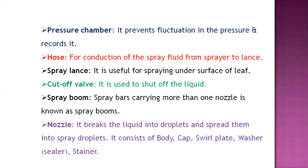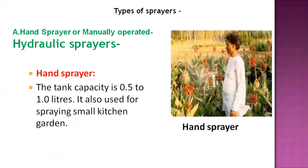Just like dusters, there are different types of sprayers available. The first type is the hand sprayer or manually operated sprayer. The hydraulic hand sprayer is one where one person can easily spray while holding it. It is very small and used for small kitchen gardening. The tank capacity is about 0.5 to 1 liter and is generally used for small kitchen gardens.